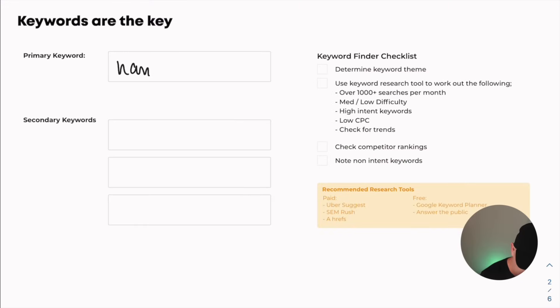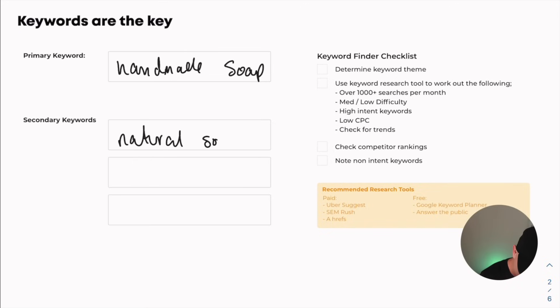As I mentioned at the start, I've created a little checklist that we can use. I'm going to write these keywords directly into the checklist: handmade soap as primary, natural soap and homemade soap as secondary keywords. Now that we know what keywords we want to rank for, we need to put them within our Shopify store so that search engines can find them and rank us for those keywords.